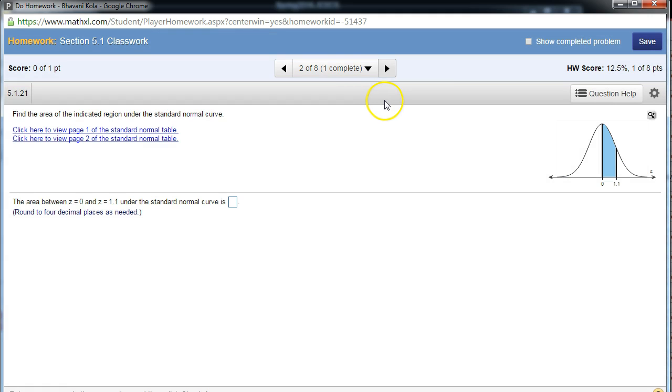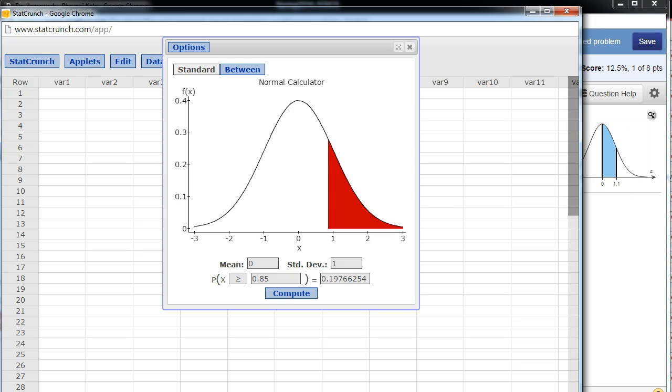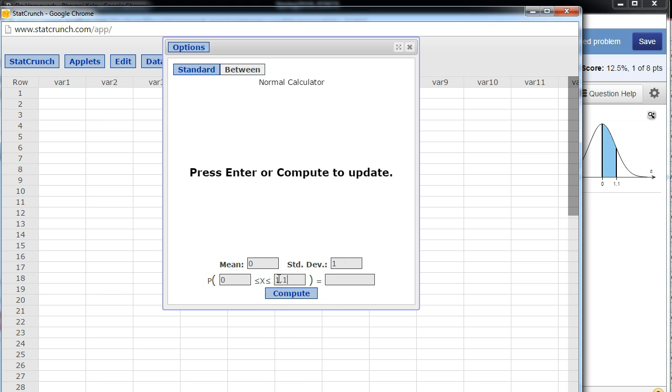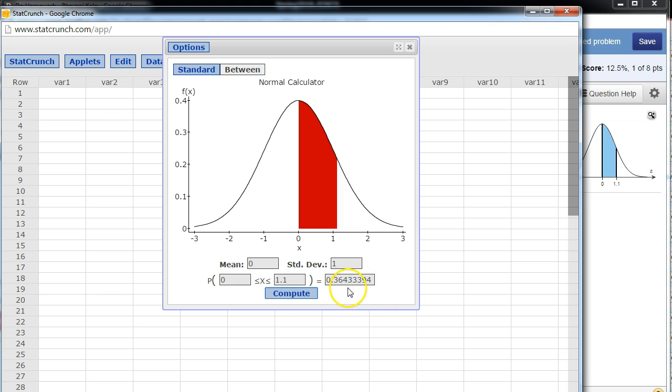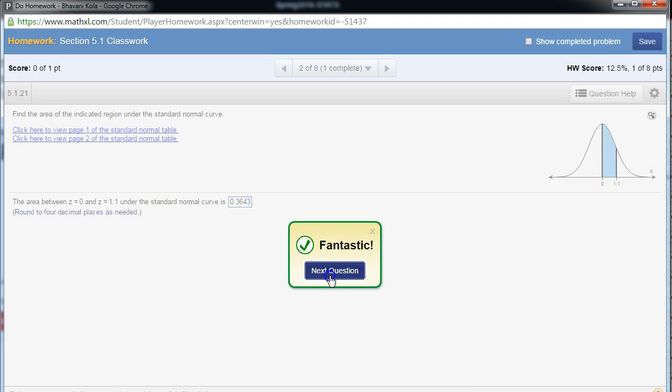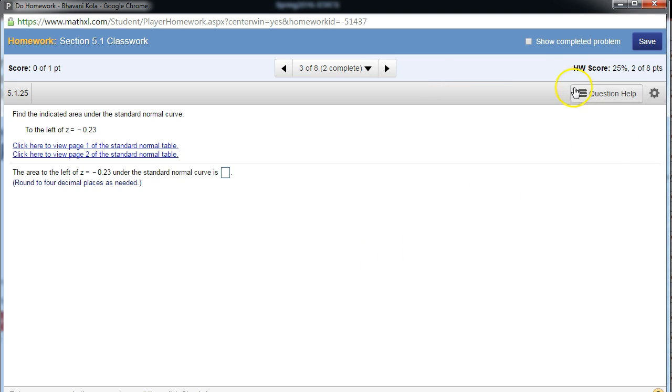Moving on to the next one. Here they want us to find the area between these two Z values. I'm simply going to go to my StatCrunch table here and I'm going to click on the between button. Then I know it has to be between 0 and 1.1, and my area is 0.3643. Four decimals: 0.3643. Check my answer and that's good.